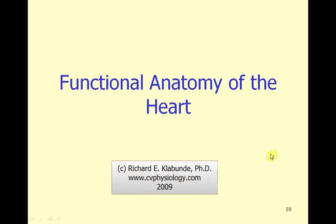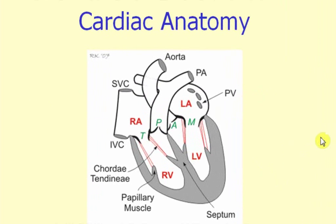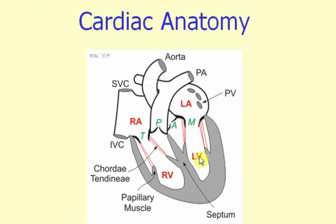This lecture will be examining the functional anatomy of the heart. The heart is comprised of four chambers. The uppermost chambers are called the right atria and the left atria. These two chambers are sitting on top of two larger chambers, the right ventricle and the left ventricle.